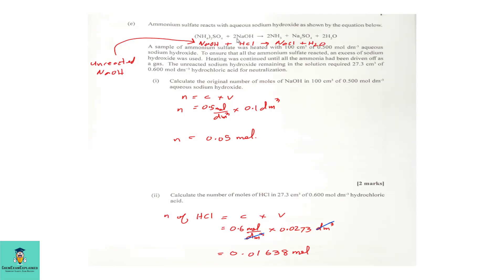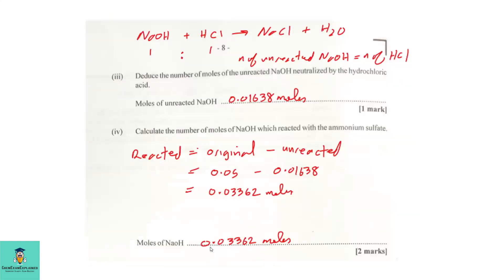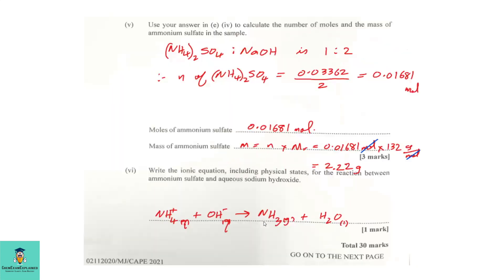So, if the moles of sodium hydroxide, which we calculated to be 0.03362 moles of sodium hydroxide, we must halve it to find the moles of ammonium sulfate. So, here we have the answer. Ammonium sulfate to sodium hydroxide is 1 to 2. Therefore, the number of moles of ammonium sulfate is the moles of reacted sodium hydroxide divided by 2, which gives us the answer of 0.01681 moles.